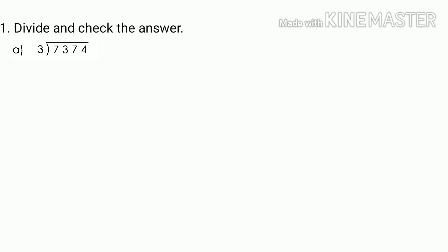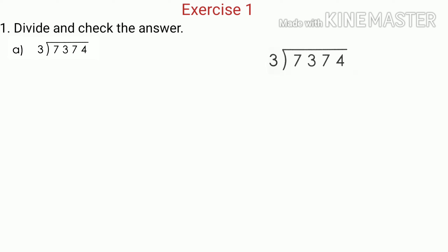Now let's solve question number 1a from exercise 1. In this question, we have to divide 7374 by 3, and then check our answer using a certain rule. The number under the division bar, that is 7374, is the dividend. And the number outside the bar, that is 3, is the divisor. In order to carry out division, we will first compare the leftmost digit of the dividend with the divisor.